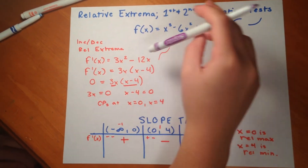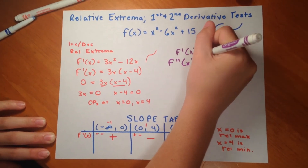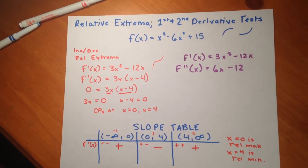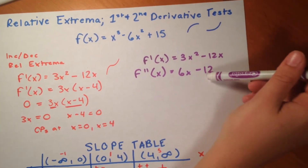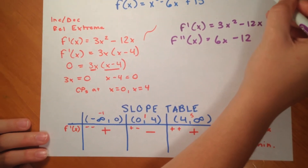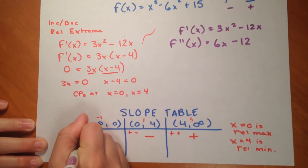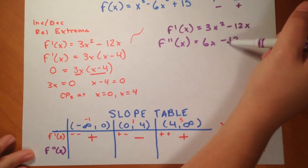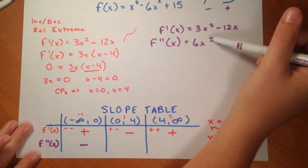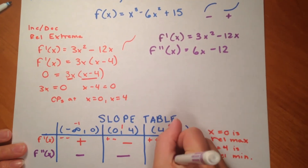For the second derivative, we take the derivative of the derivative. So f double prime x equals 6x minus 12. We use the same process as before, plugging arbitrary values in to determine if f double prime x is positive or negative. If it is positive, the curve is concave up; if it is negative, the curve is concave down. Using negative 1: 6 times negative 1 minus 12 is negative — so concave down. Using 1: 6 minus 12 is negative — so concave down. Using 5: the result is positive — so concave up.